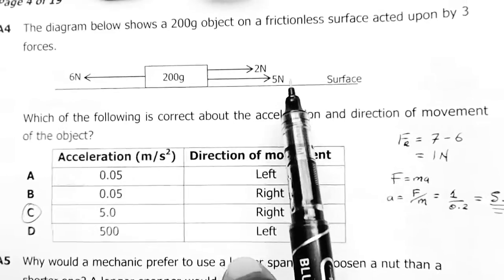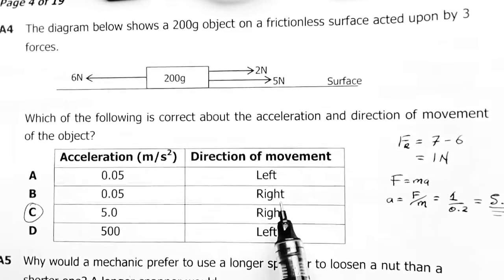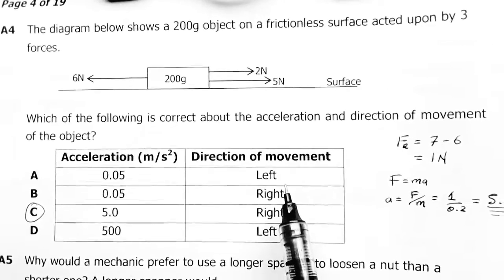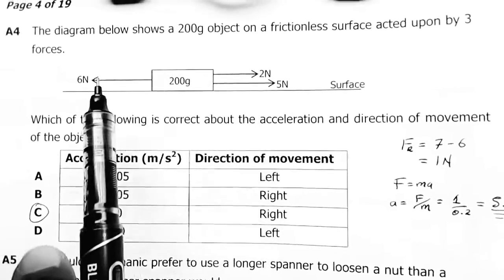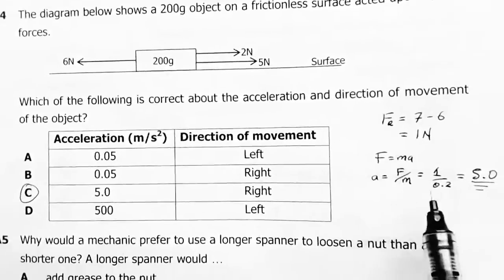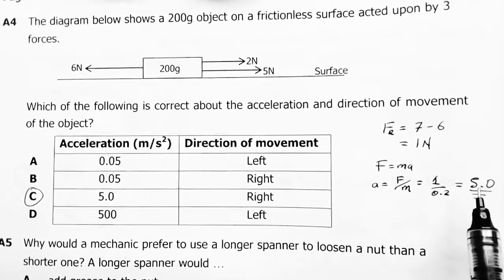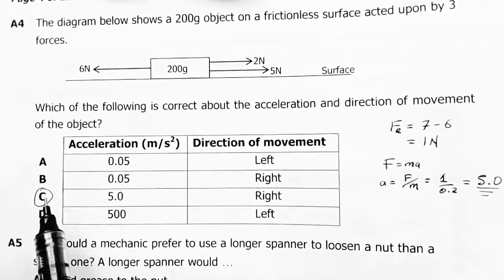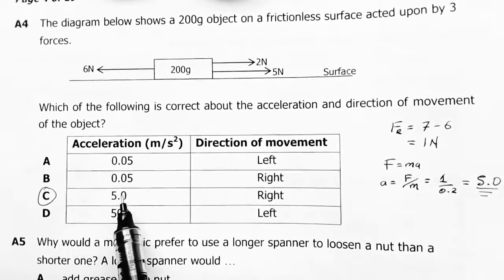Which of the following is correct about the acceleration and direction of movement of the object? Direction will be to the right. Then acceleration will be caused by a resultant force of 1 newton. The acceleration will actually be 5 meters per second squared. My answer here is C.